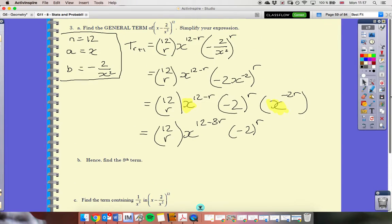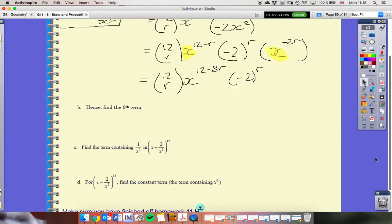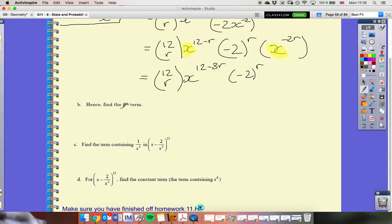To find the 8th term, we've got to be a little bit careful here. I don't think this is a very good way of asking the question. Because we start with term 0. Well, r is 0, sorry, in our first term. So, r is always 1 smaller than the term you're after. So, if I'm after the 8th term, I need r equal to 7.